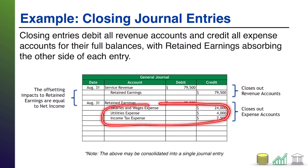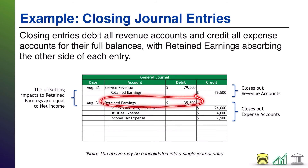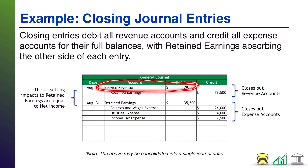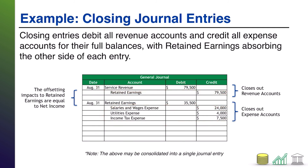Then we take all of those expenses and credit them for their balances, which zeros all of them out. What do we debit? We debit retained earnings. Now we've dumped all of our revenue into retained earnings and all of our expenses into retained earnings, and the offset between these two effects equals net income — that's how net income gets into retained earnings. By the way, I show this as two separate entries for learning purposes, but you could combine them into a single entry with the debit to revenue, credits to expenses, and a net credit to retained earnings for the net income difference.